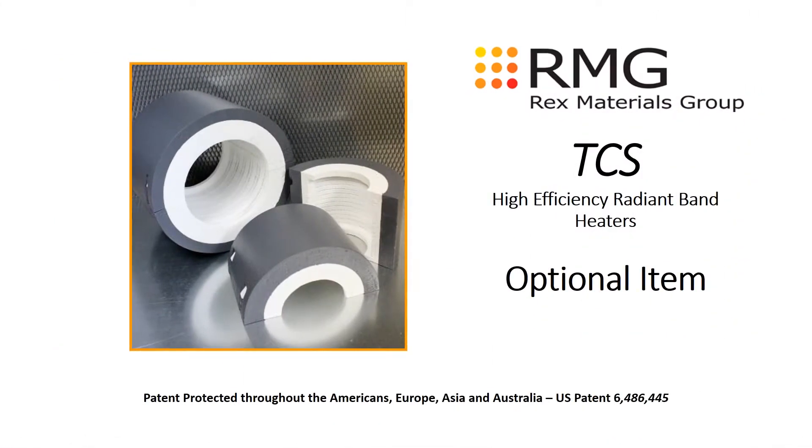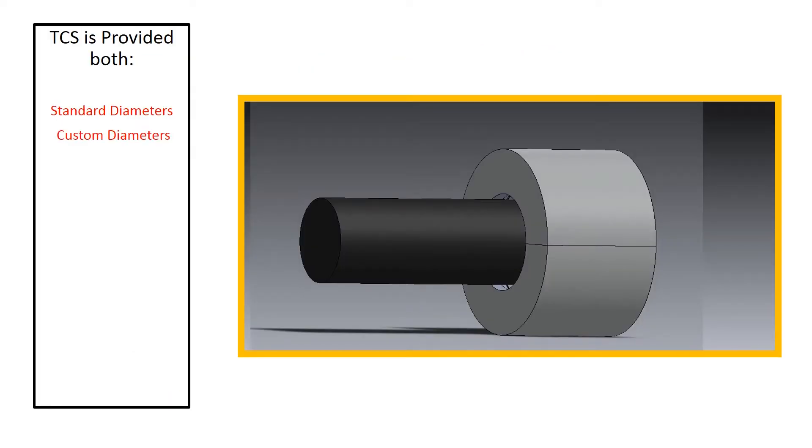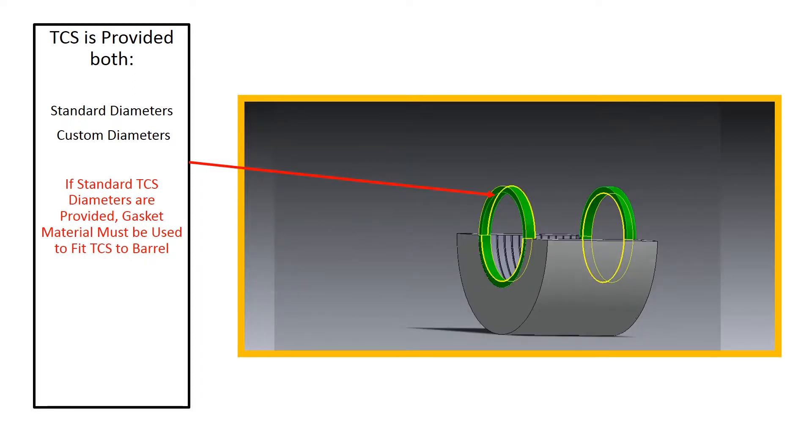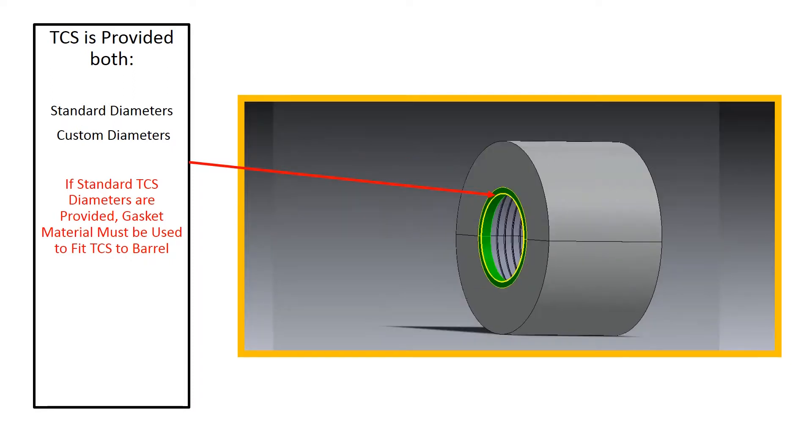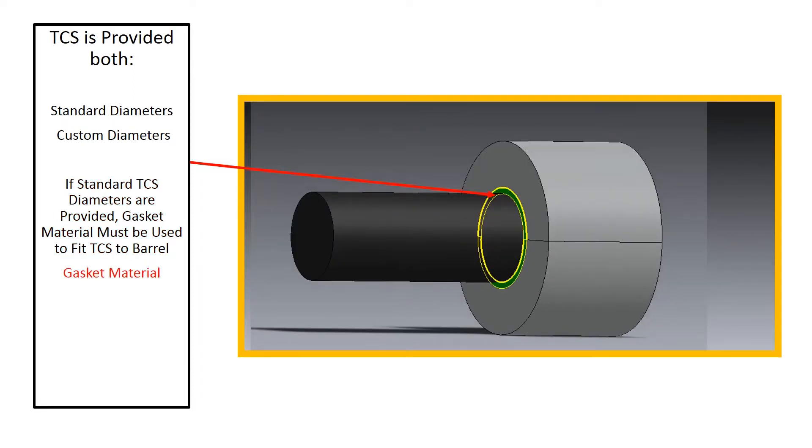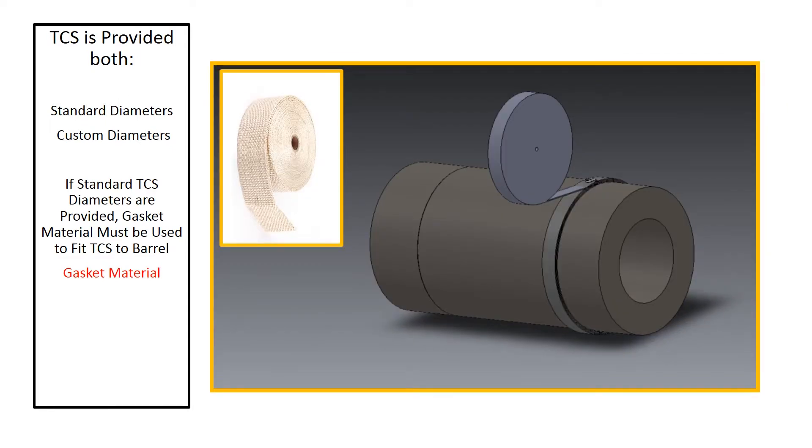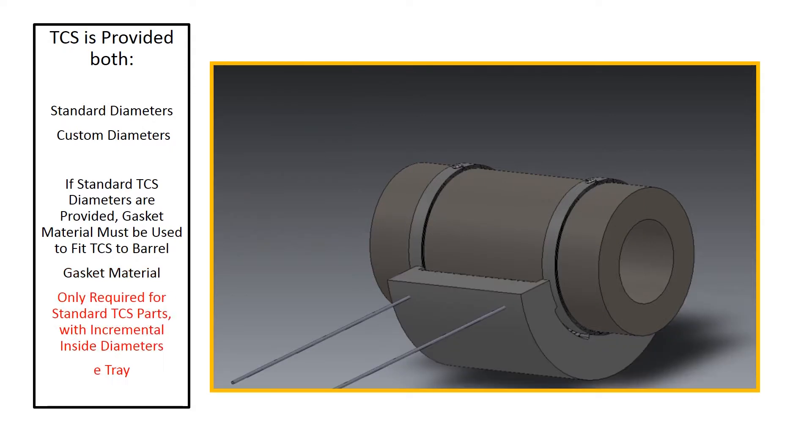There is one optional item sometimes provided with TCS. TCS can be provided either in standard incremental diameters or in custom diameters. If TCS is provided in standard incremental diameters, a gasket material must be used to fit TCS to the barrel. However, the material is only required for standard TCS parts with incremental inside diameters.